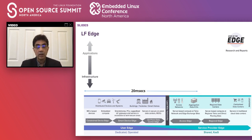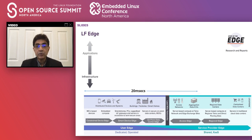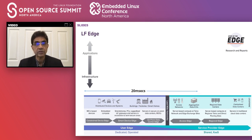Then you have the last mile — various forms of connectivity to get into a service provider network. The service provider edge starts with some sort of base station or hardwired telco exchange point, then gets into a smart central office, access aggregation hub, and so on. Up to that point you're in the 20-millisecond zone, where you get most of your latency-sensitive edge applications. Everything after that — regional data centers, centralized data centers — these are not edge data centers, not edge compute. Let's be very clear on what is edge and what is not.